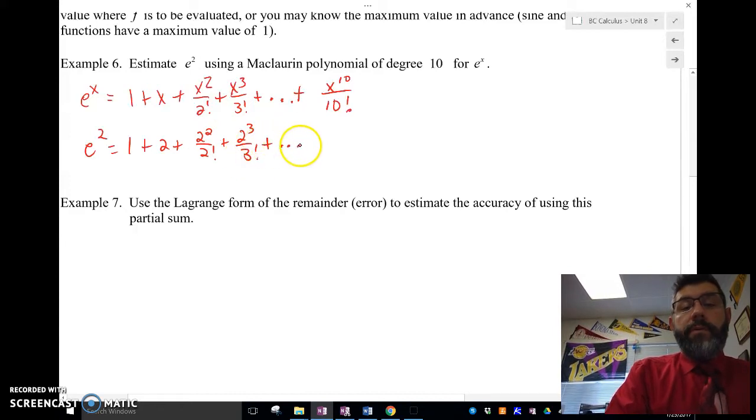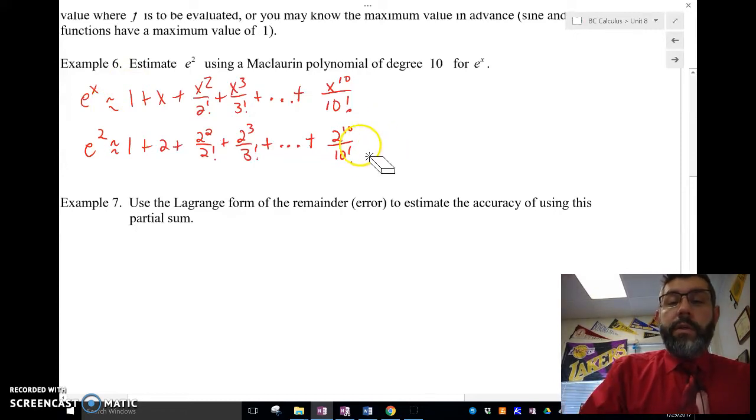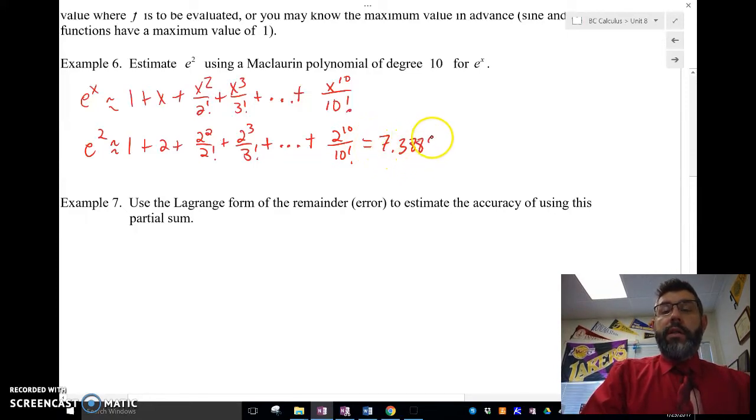And that's going to go all the way out to x to the 10th over 10 factorial, and I want to know e squared, so I'm going to plug in 2 for my x. 2 to the 10th, 10 factorial. I forgot to put my little squigglies. Don't forget your little squigglies, right? It's an approximation. When I go ahead and plug that in a calculator, I'm going to get 7.38899.